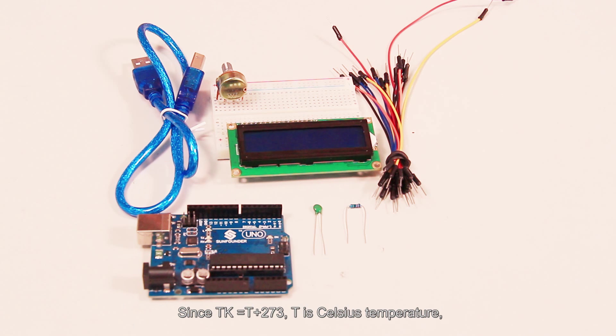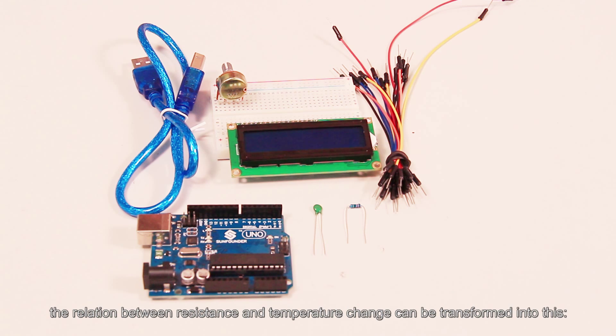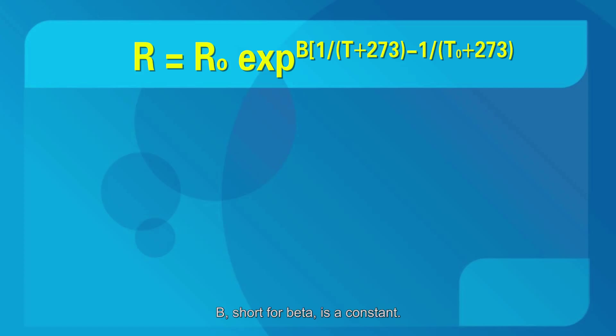Since TK equals T plus 273, T is Celsius temperature, the relation between resistance and temperature change can be transformed into this. B short for beta is a constant. Here it is 4090. R0 is 10K ohms and T0 is 25 degrees Celsius. The data can be found in the data sheet of thermistor. Again, the above relation can be transformed into one to evaluate temperature.